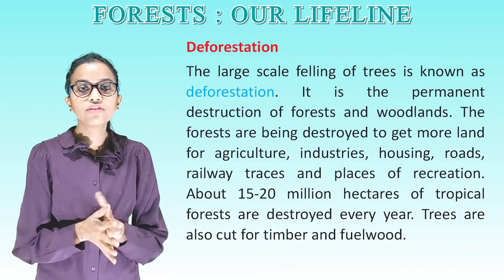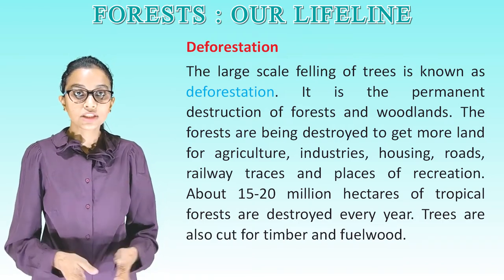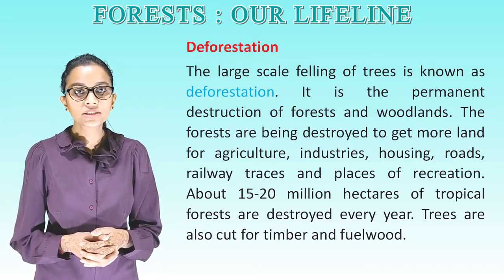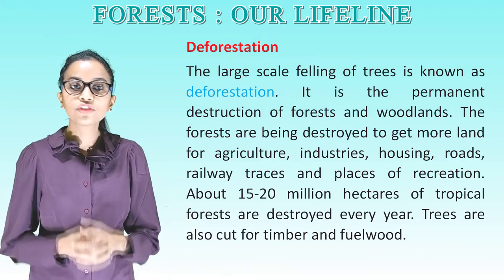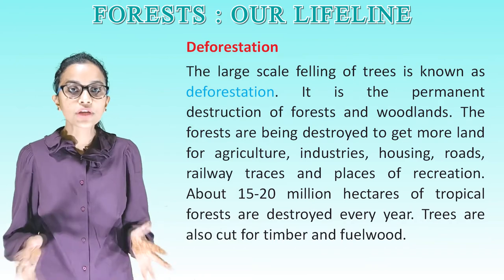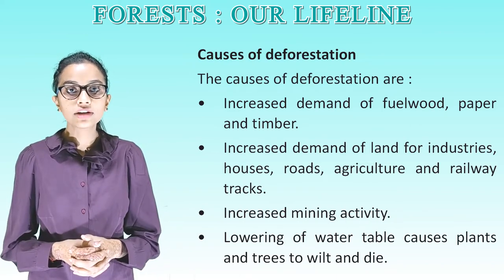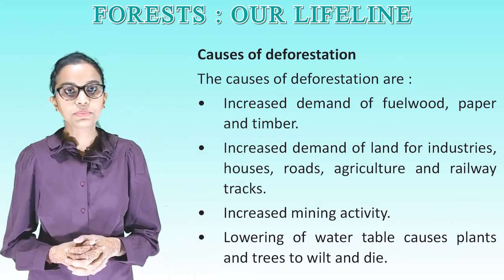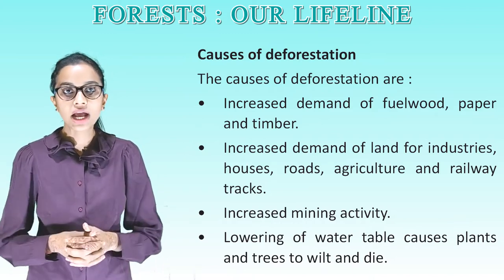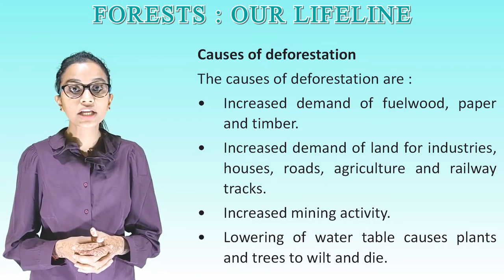Deforestation: The large-scale felling of trees is known as deforestation — it is the permanent destruction of forests and woodlands. Forests are being destroyed to get more land for agriculture, industries, housing, roads, railway tracks and places of recreation. About 15 to 20 million hectares of tropical forests are destroyed every year. Trees are also cut for timber and fuelwood. Causes of deforestation include: increased demand for fuelwood, paper and timber; increased demand for land for industries, houses, roads, agriculture and railway tracks; increased mining activity; and lowering of the water table causing plants and trees to wilt and die.